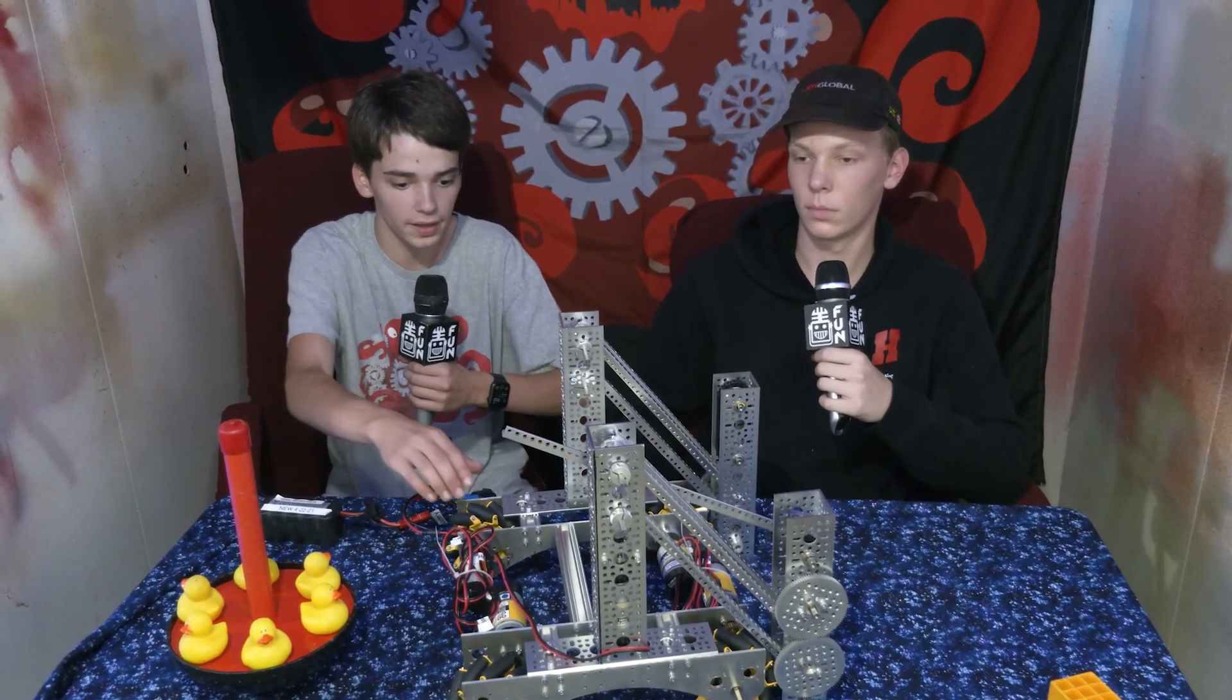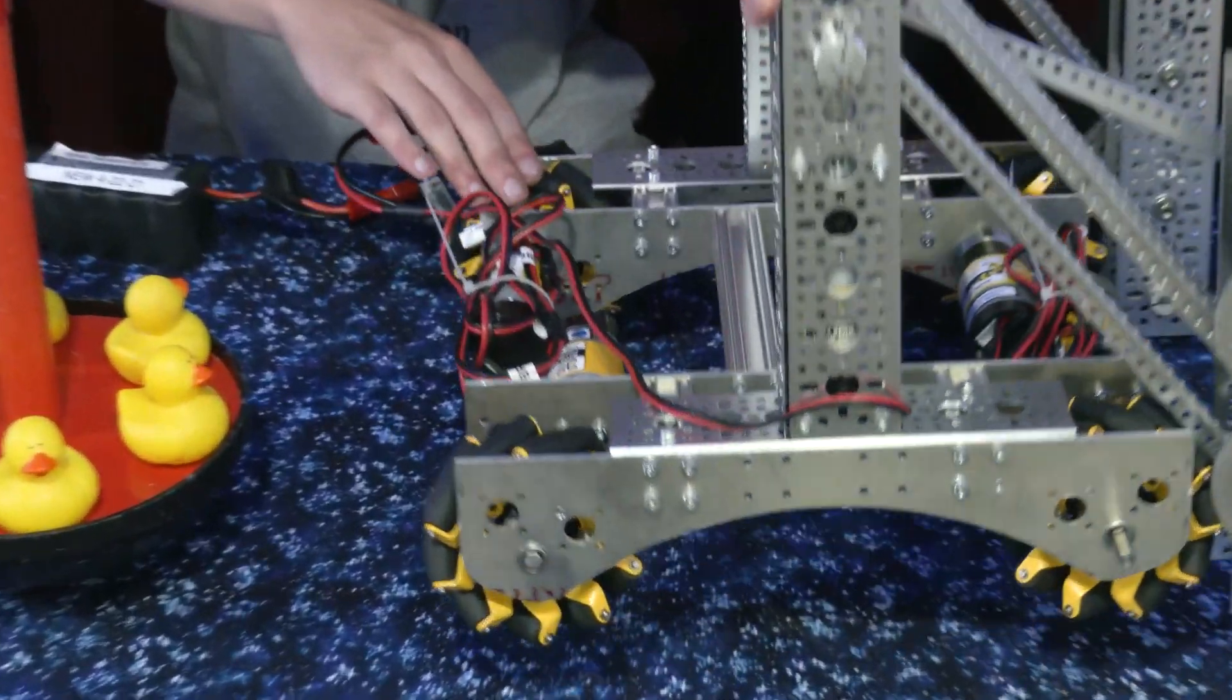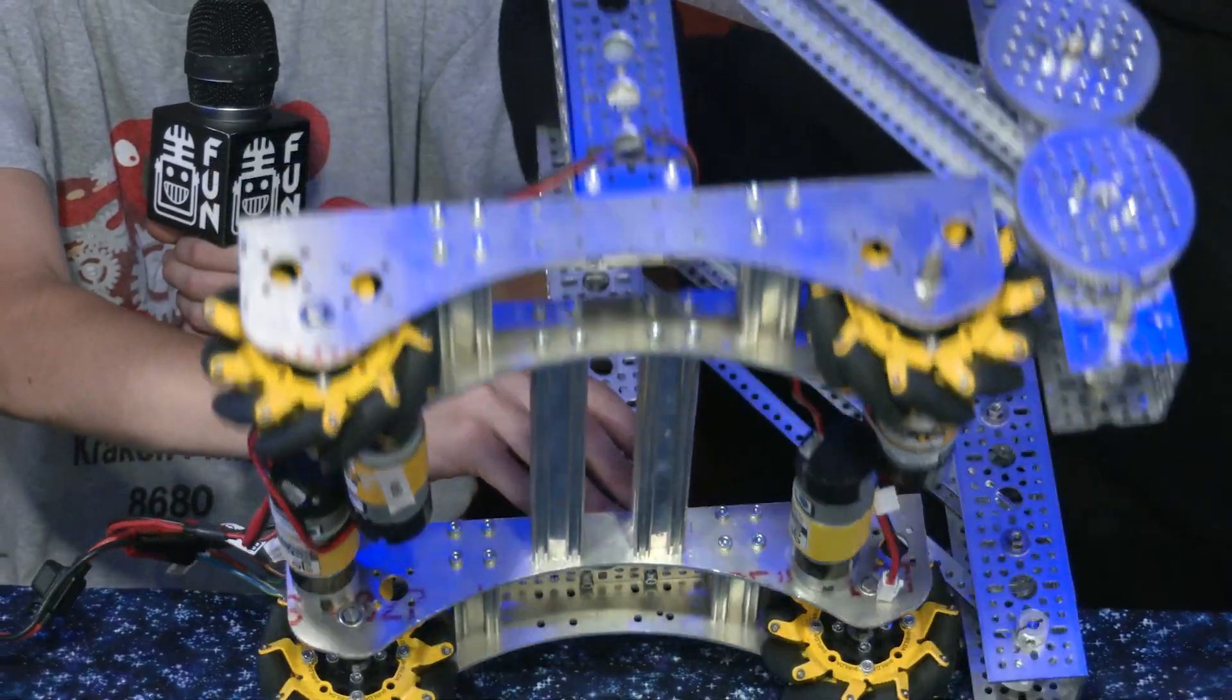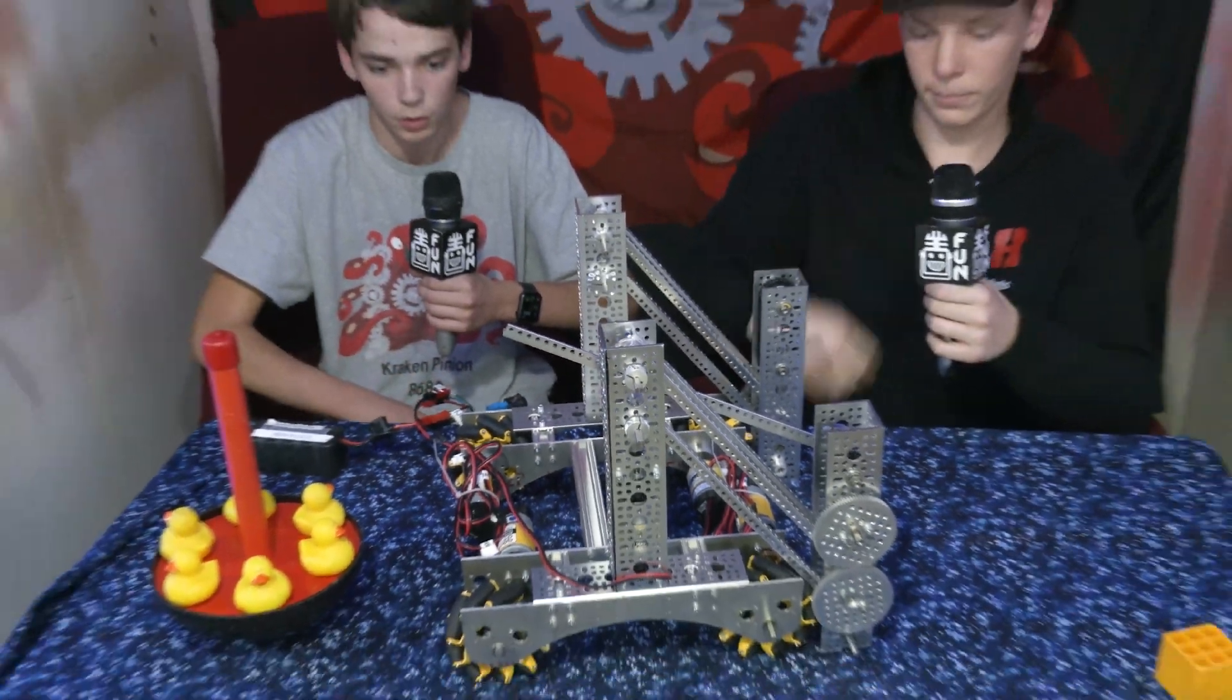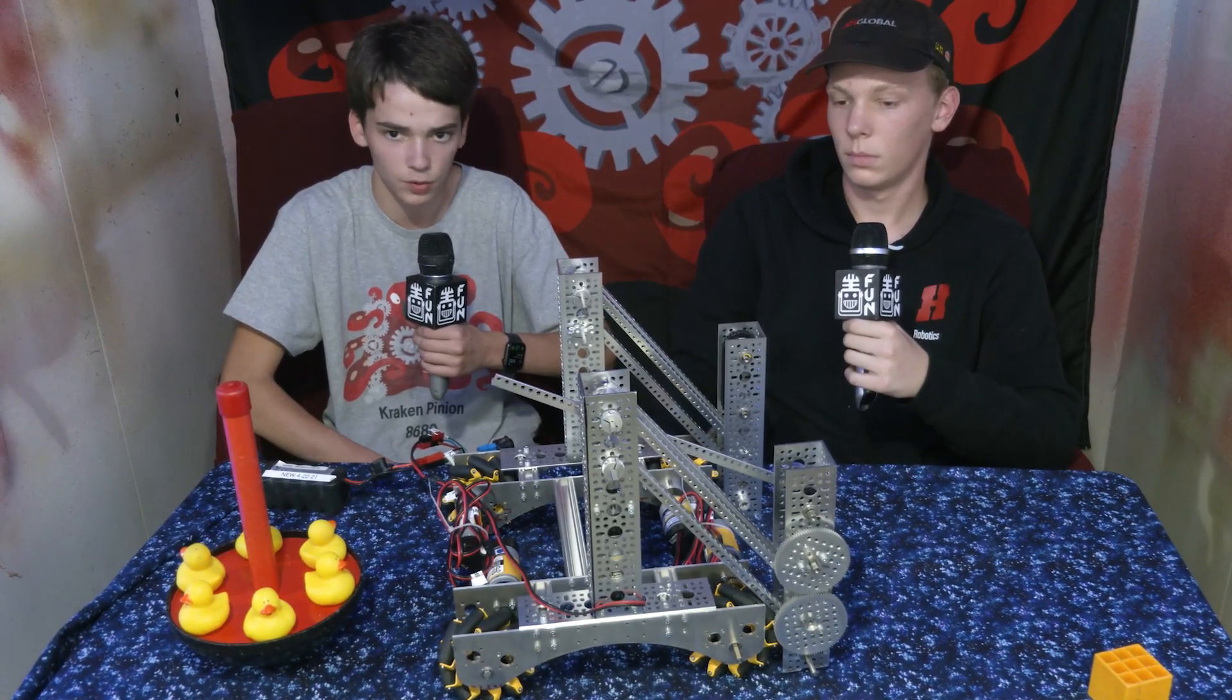Additionally, we're using a smaller drivetrain. It's roughly 12 by 12 inches to allow for easier navigation between the poles so that we can navigate around the field quickly and without hitting them to score as fast as we can.